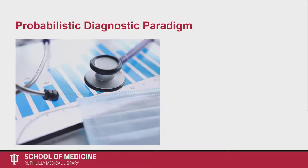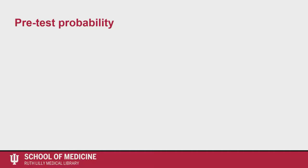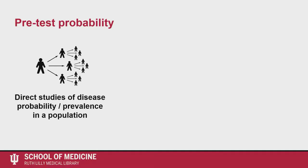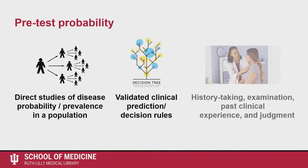As shown in the previous slide, you want to first figure out the pretest probability of the disease, or how likely it is that the patient has the disease. There are three ways that pretest probability is determined: using direct studies of disease probability, which are studies examining prevalence of disease; validated clinical prediction decision rules, which are studies used when creating prediction tools; and history taking, examination, past clinical experience, and judgment.